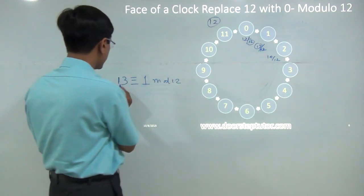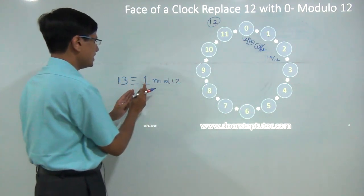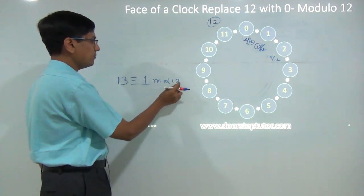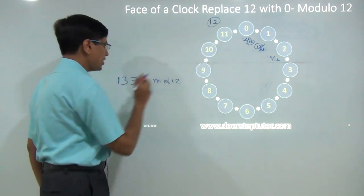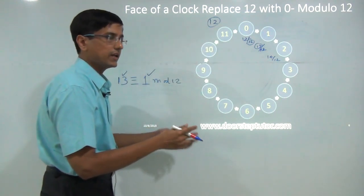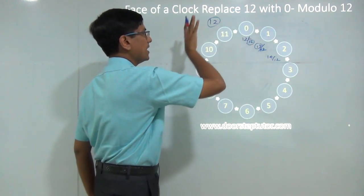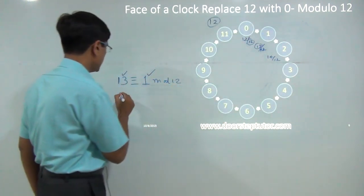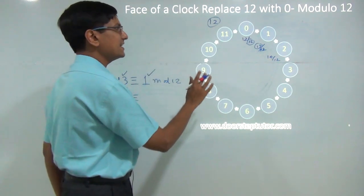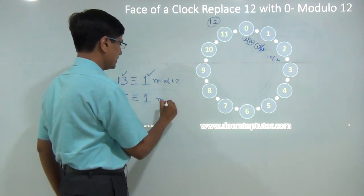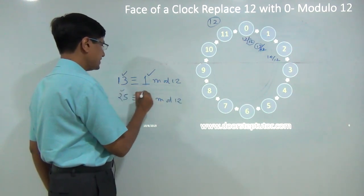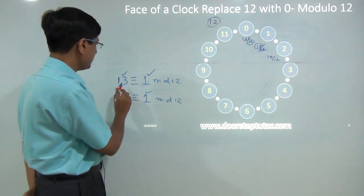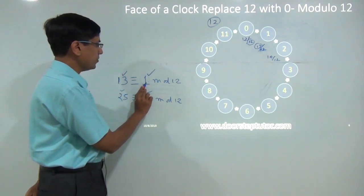What does that mean? It means that when I divide 13 by 12, I get a remainder of 1, and this is the way to write it: 13 is congruent to 1 mod 12. In this clock world, 13 is equivalent to 1. Whether I go forward 1, 13, or 25 hours from 12, the clock face looks exactly the same, because all of these numbers leave a remainder of 1 when divided by 12.